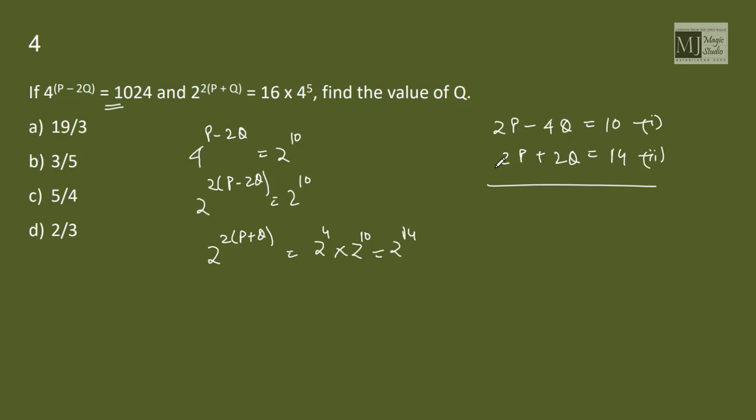Now if we solve these two, subtracted minus 6Q is minus 4, Q is 4 by 6 that is 2 by 3. So what is the question? Find the value of Q. Q is 2 by 3. Option D.